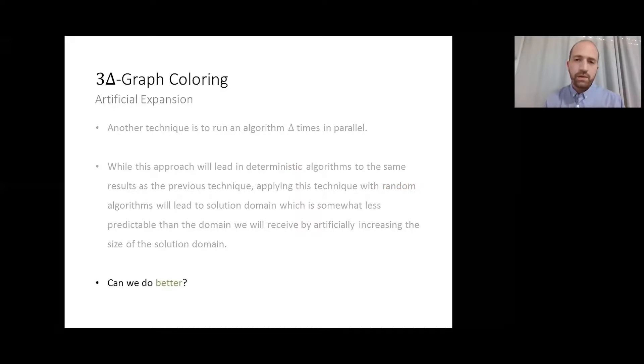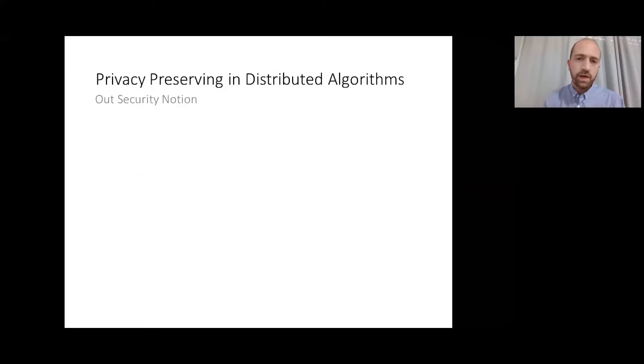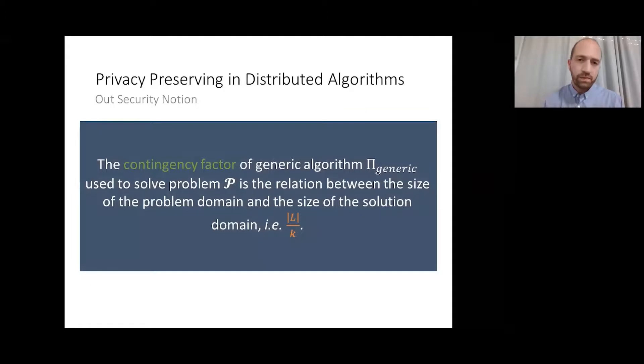However, can we do better than just artificially expanding the classic solution and picking one arbitrary label? In order to answer this question, we define one other term, which is the contingency factor. The contingency factor is the ratio between the size of the problem domain and the solution domain. It helps us to measure how many labels we added to achieve better security. The lower the contingency factor, the lower overhead we pay for security. In the 3 delta graph coloring algorithm I just presented, the contingency factor is 3, which means that while we expanded the problem domain by a factor of delta, the solution domain is delta times bigger too, hence the security was enhanced proportionally.